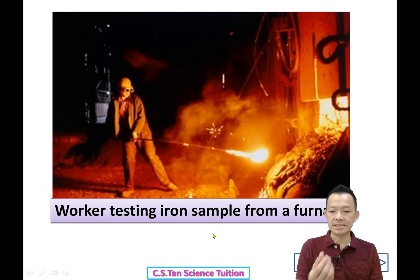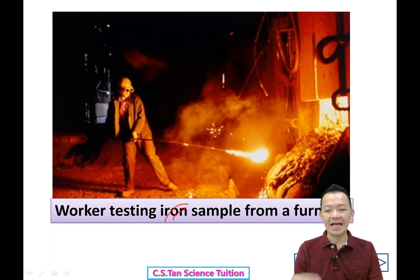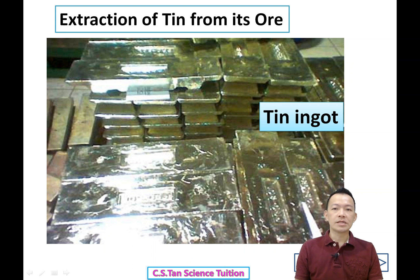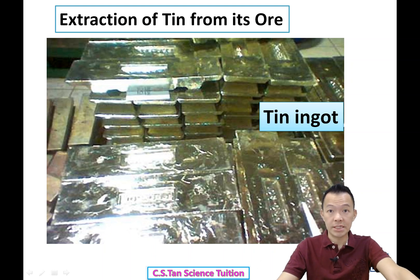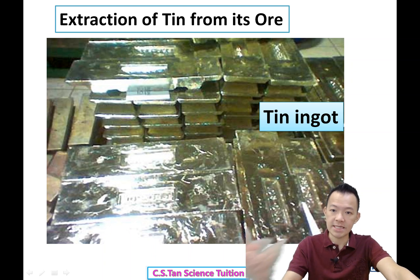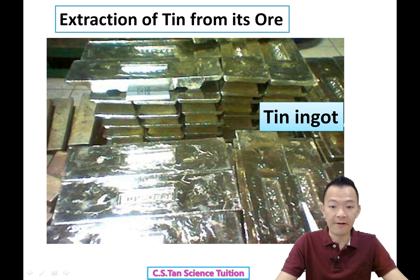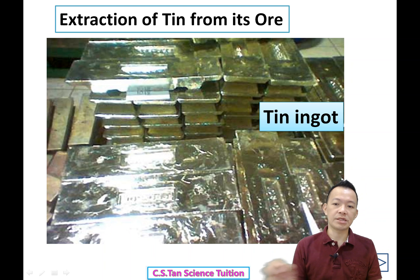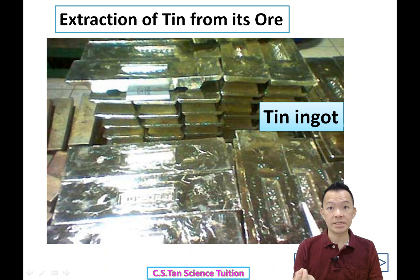The worker tests the tin sample from the Blast Furnace. So after they get the molten tin, they actually have the process called electrolysis to purify the tin — purification by using electrolysis, like in Form 4. After the purification, the tin will become 99.9% pure.